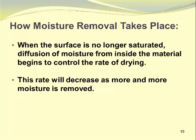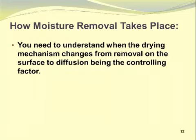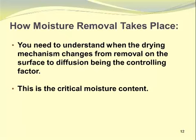The rate of drying will decrease as more and more moisture is removed. When the saturated surface is gone, there is no moisture pool on the surface. Moisture diffuses slowly from the center of the product to the surface where it is removed. The warm, dry air picks up less moisture than when there was a saturated pool. You need to understand when the drying mechanism changes from surface removal to diffusion control — this is the critical moisture content.